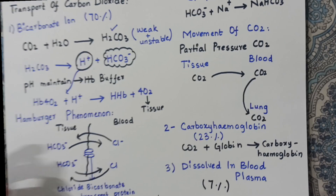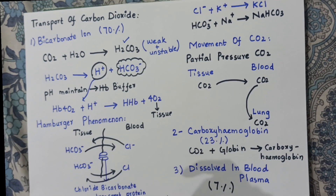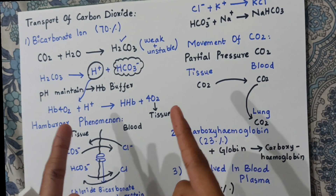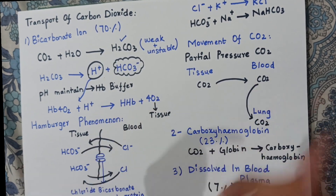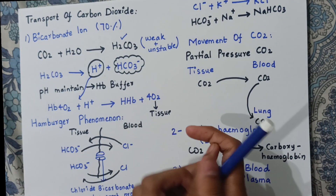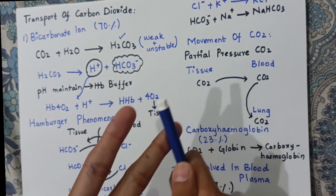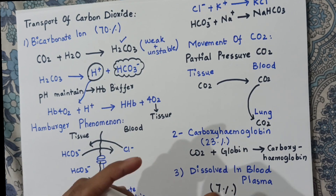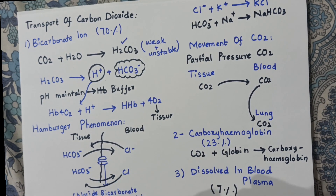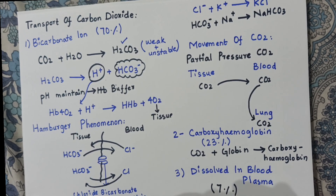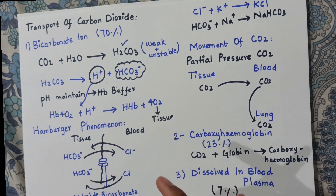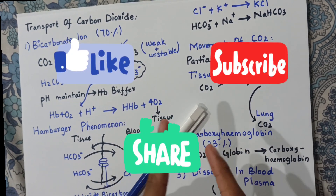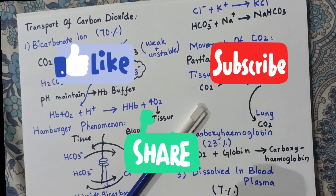So today's lecture has come to its end. The three methods of carbon dioxide transport are: in the form of bicarbonate ions (70%), carboxyhemoglobin (23%), and dissolved in blood plasma (7%). I hope this topic was understood and many concepts are now clear. If you still have any doubts, feel free to comment in the comment section below. Also share on Instagram.